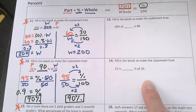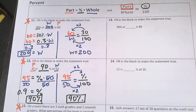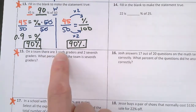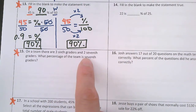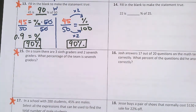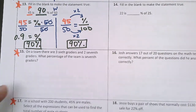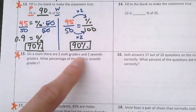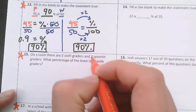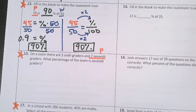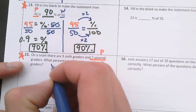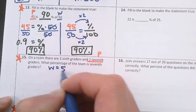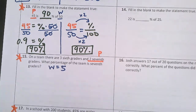Now you can try number 14 on your own and come back to check number 15 when you're ready. Number 15: on a team there are 3 sixth graders and 2 seventh graders. What percentage of the team are seventh graders? We're trying to find the percent, and we know part = percent × whole.